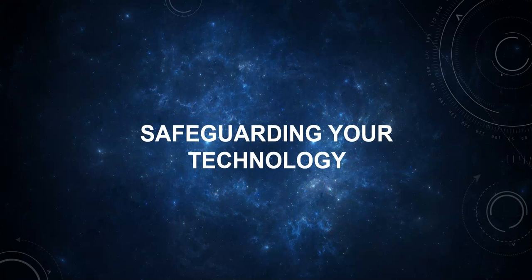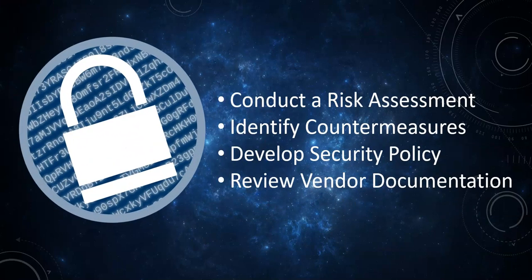The fifth step in the process is safeguarding the technology after it has been implemented. This step involves conducting a risk assessment to determine any potential threats or vulnerabilities within the chat service application. Additionally, the administrator will work with the systems admin to identify countermeasures and develop a security policy using Tarleton State University's technology plan as a guide. Lastly, the library administrator and the systems administrator will review vendor documentation to identify built-in security measures, for example, an IP blocking feature. They will familiarize themselves with everything needed to secure the chat service and develop procedures for the reference services staff to safely use the chat application.